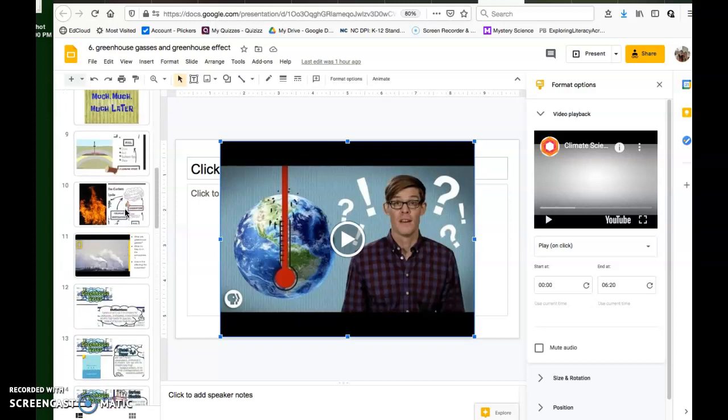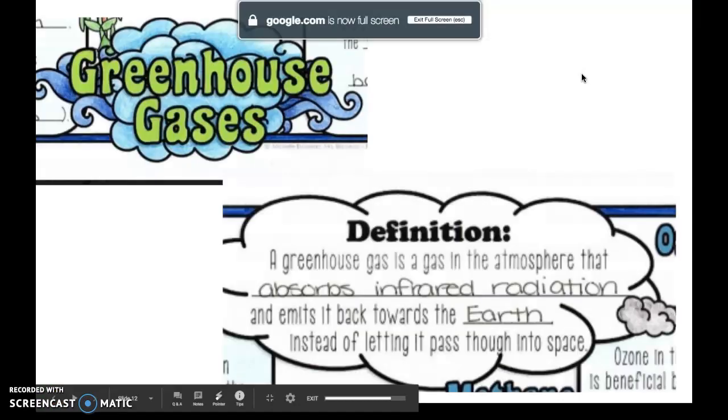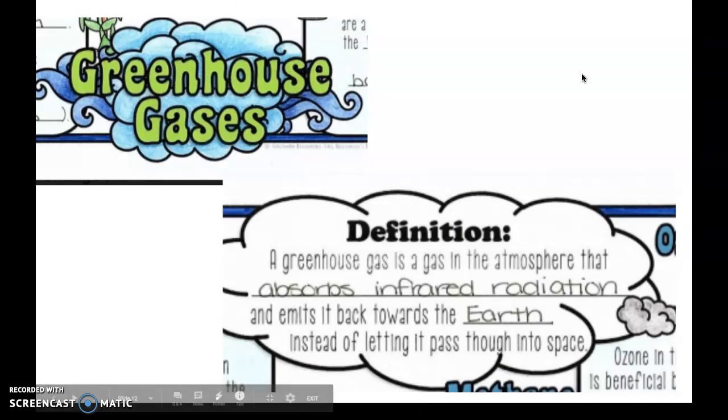Yesterday we spent time learning all about the carbon cycle, and all of that was to better understand how humans have taken what is natural and what is naturally happening in the atmosphere and made it disproportionate to what it should be. We've taken what should be a natural cycle and made it heavy in one category, and that is the atmospheric CO2, and all that plays a part into our greenhouse gases. Even though we focus a lot on carbon dioxide, CO2, that's not the only greenhouse gas.